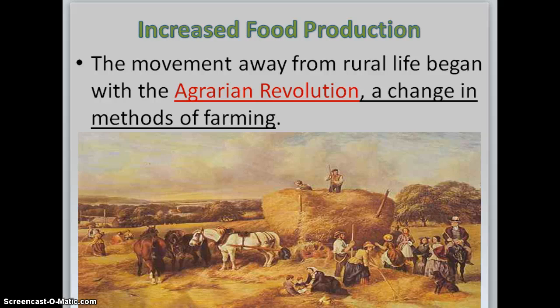You did not have kids dying before the age of two because they were stronger children due to better foods. The Agrarian Revolution means a change in methods of farming.